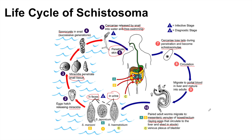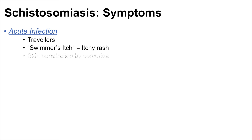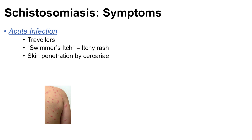When an individual is infected with the schistosoma parasite, what are some of the symptoms? In an acute infection, which typically occurs in travelers going to some of these affected regions, individuals can get what we call a swimmer's itch or an itchy rash from the penetration of cercariae into the skin — it can look something like this rash from being in contaminated waters.